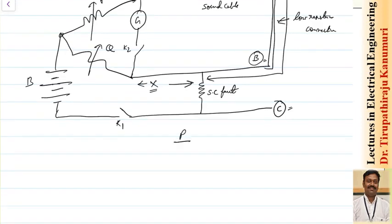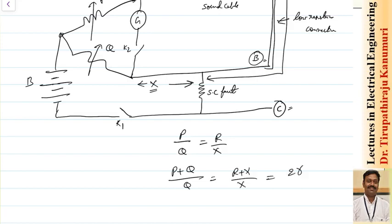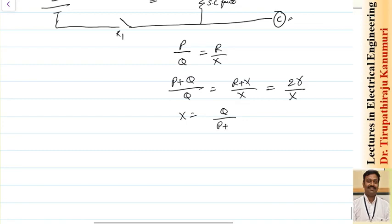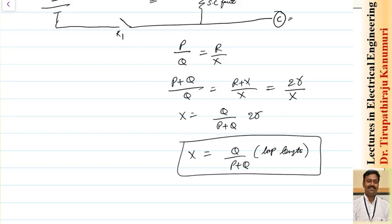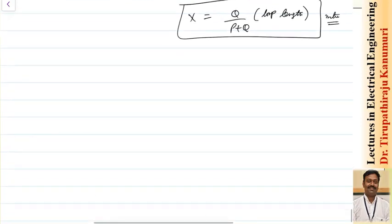Again, same as before — under balance condition, P/Q = R/X. This gives (P+Q)/Q = (R+X)/X, and R+X = 2R as already derived. Therefore, X = Q/(P+Q) × 2R, which means the distance D = Q/(P+Q) × loop length. This gives the distance in meters; the intermediate value X is in ohms, and we convert it to meters using the resistance per unit length.